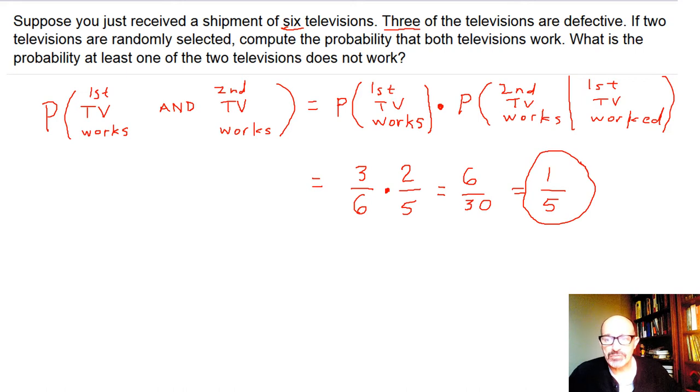And if anyone else would be interested in the second question, Erica, I know you know how to do that, but what is the probability that at least one of the two televisions does not work? Well, we know that the probability of at least one is one minus the probability of none. That is, that none of the two televisions does not work. That is the probability that both of them do work.